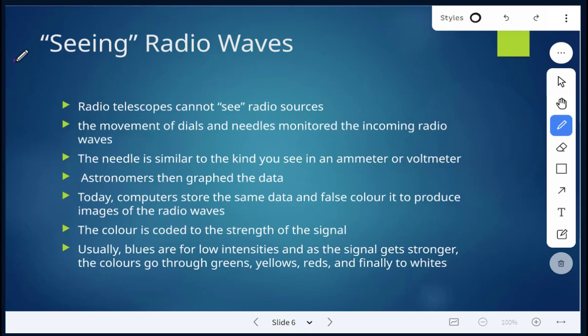So, seeing is in quotations. These radio telescopes cannot see radio sources. So what happens is there's movement of dials and needles that are monitored from those incoming radio waves. That needle is similar to something you would see on an ammeter or voltmeter.